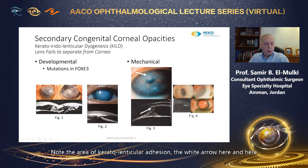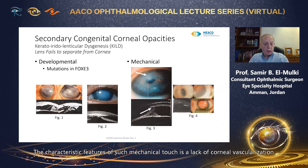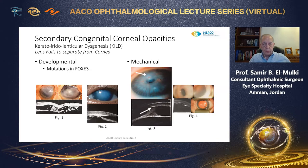Note the area of keratoiridolenticular adhesion indicated by the white arrow, and iridocorneal adhesions indicated by the dotted arrow. Lens and iris are essentially normal in this case. This is likely due to mechanical touch, and the characteristic feature of such mechanical touch is a lack of corneal vascularization.